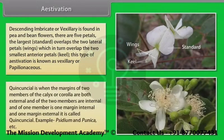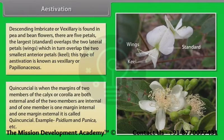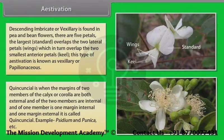Quincuncial estivation is when the margins of two members of the calyx or corolla are both external, two members are internal, and one member has one margin internal and one margin external. Example: Citium and Punica.